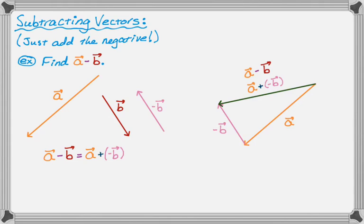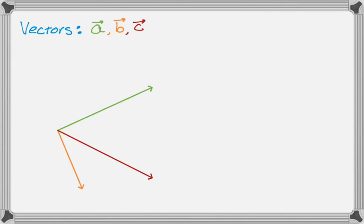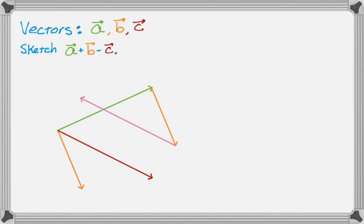Now let's do a problem with three vectors to show how this works. Given vectors a, b, and c, I want to sketch a plus b minus c. I start with a, then from the terminal point of a I draw vector b. Then instead of minus c, I do plus negative c — negative c has the same magnitude as c but is in the opposite direction. From the terminal point of b I draw negative c. Then I go from the initial initial point to the terminal terminal point, and that vector is the resultant vector — the result of all the operations.